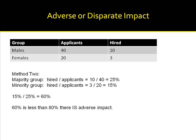The second method is illustrated here. In this method, we do the same thing in terms of determining the hiring rate for both the majority group and the minority group. That is: the number of people hired divided by applicants equals 10 divided by 40, or 25% for males; and 3 divided by 20, or 15% for females. Now we take those two percentages and form their ratio: 15 divided by 25% is equal to 60%. 60% is less than 80%, therefore there is adverse impact.